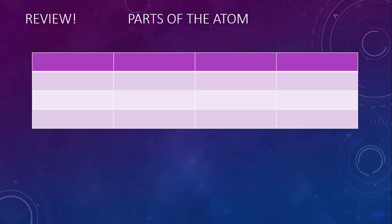What should definitely not be new to you are the three basic parts of the atom. All atoms in the universe are made up of protons and neutrons, which exist inside the nucleus of the atoms, and electrons, which exist outside of the nucleus.